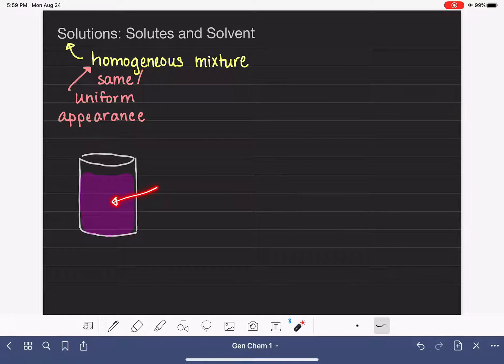So when we look at this glass, we can't see the water molecules separate from the food coloring, separate from the sugar molecules, or whatever other components might be in there. All we see is one uniform or similar appearance. And that's what we mean when we say homogeneous. It looks exactly the same.